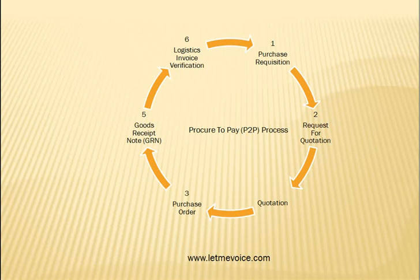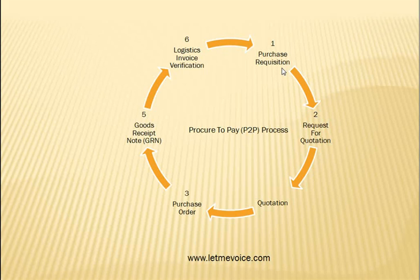The first point in the P2P cycle is Purchase Requisition. A PR or purchase requisition is an internal document — that is, it is within the company. No external stakeholder or third party is involved. It is a demand for a certain kind of material or product for a specified quantity to fulfill requirements within time.